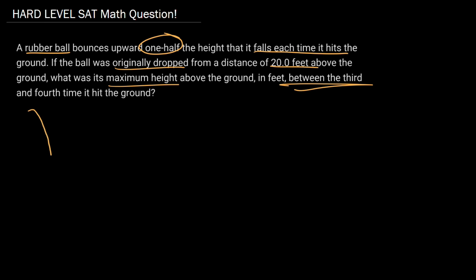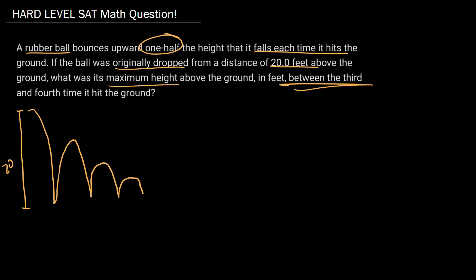So you have a ball that's dropped. It goes down, and this first distance here is 20 feet. And then it goes up one time, and then bounces half, and then half, and then half. This is the first time it hits the ground, the second time it hits the ground, the third time it hits the ground, the fourth time it hits the ground.